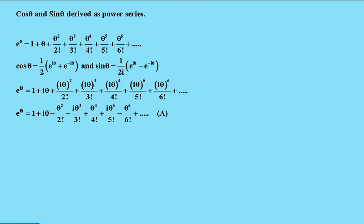Previously we know that cos theta equals a half times e to the i theta plus e to the minus i theta, and sine theta equals 1 over 2i times e to the i theta minus e to the minus i theta.